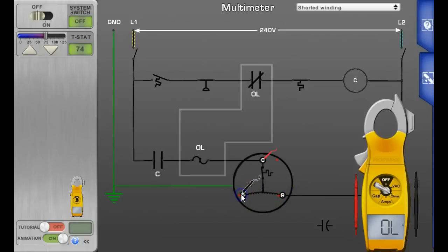So let's go ahead and check the start. Common to start, and we have one ohm. And you remember that on a good compressor, common to start is going to be up there about eight, ten, maybe twelve ohms total. So one ohm is not good.